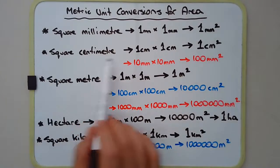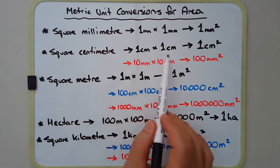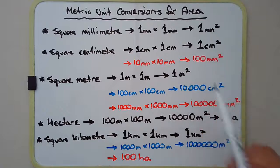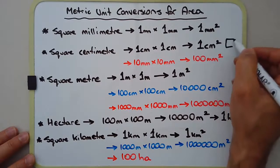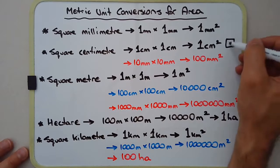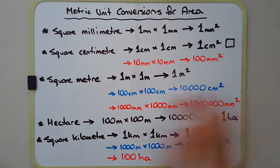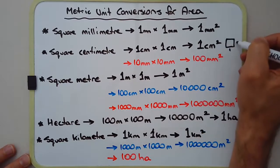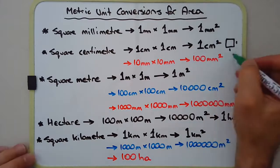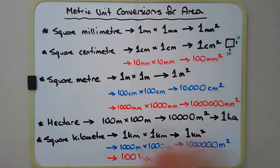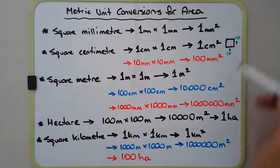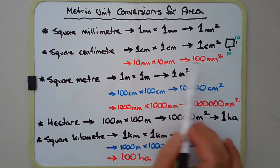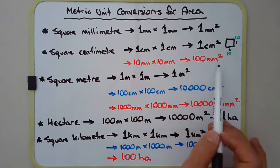Next we have square centimetres. A square centimetre is a square that's 1 centimetre times 1 centimetre, written as 1 cm with a superscript 2. It can also be converted into square millimetres, because a square centimetre — 1 by 1 — is really the same as 10 millimetres times 10 millimetres. And 10 times 10 is 100. So the conversion rate is 1 square centimetre to 100 square millimetres.